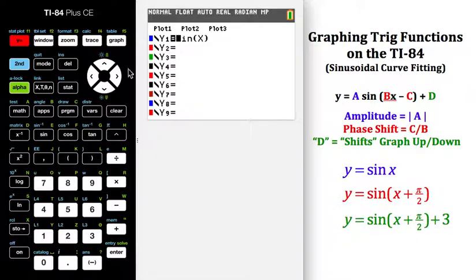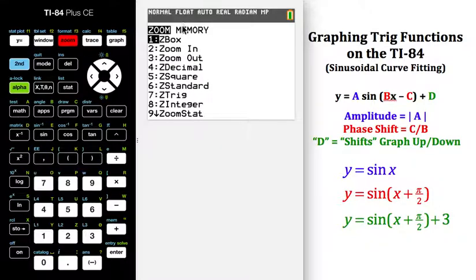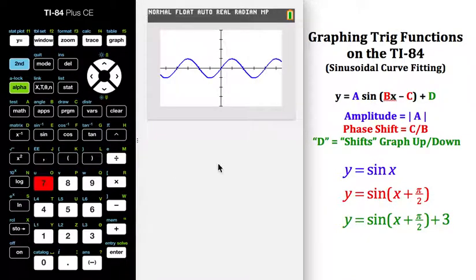My suggestion is when you're in the Y equals area and you have typed your trig function in, you should do zoom and then pick trig, number seven. You can see how this makes it look more like a trig function without any distortion. In this one, my A would be 1 and my amplitude is clearly 1.